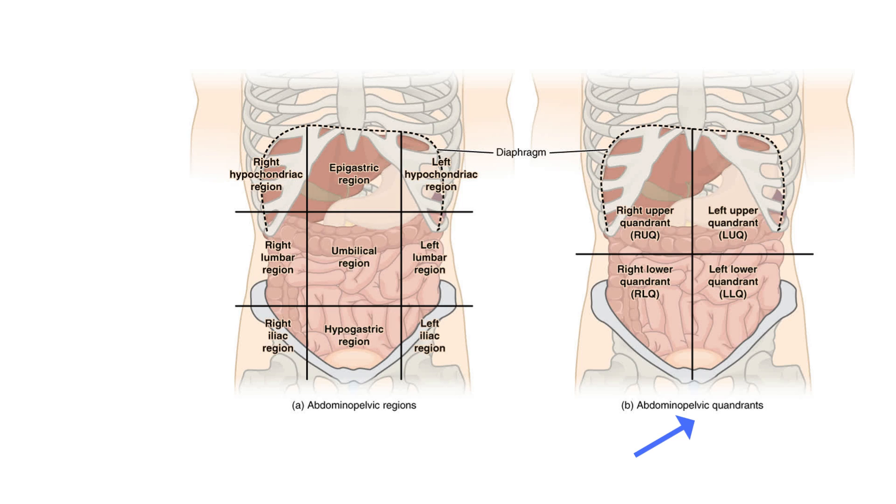For example, the gallbladder is in the right upper quadrant. The appendix in the right lower quadrant. And the spleen is in the left upper quadrant.